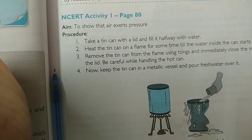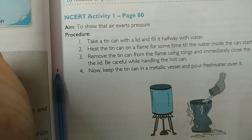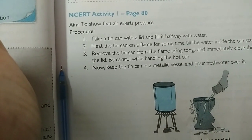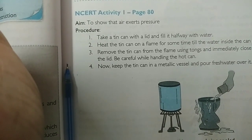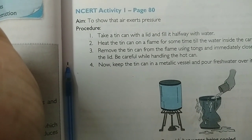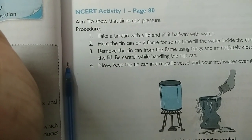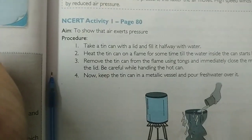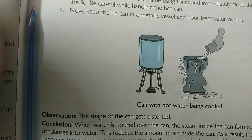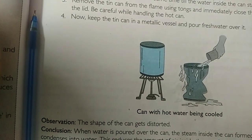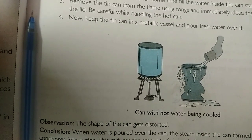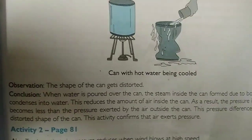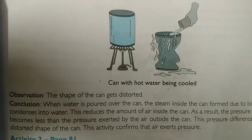Now keep the tin can in a metallic vessel and pour fresh cold water over it. Observation: the shape of the can gets distorted. Conclusion: when cold water is poured over the can, the steam inside the can, which was formed during boiling of the water, condenses back into water.